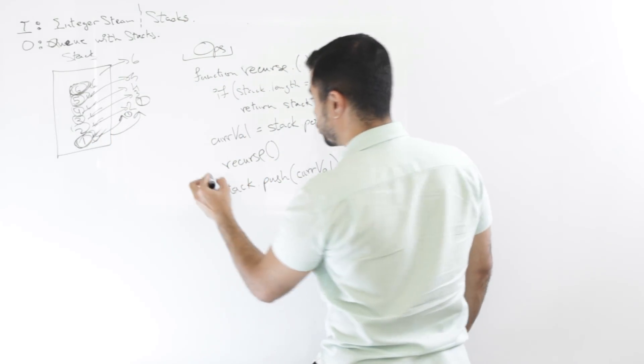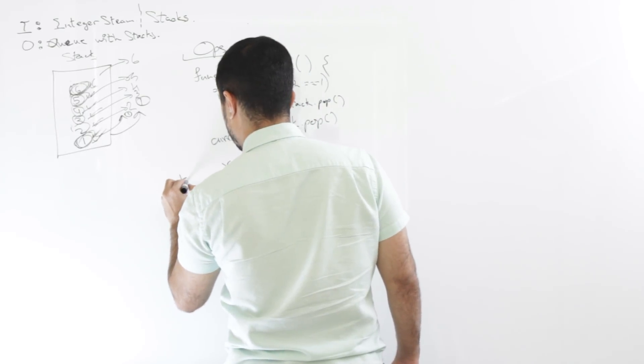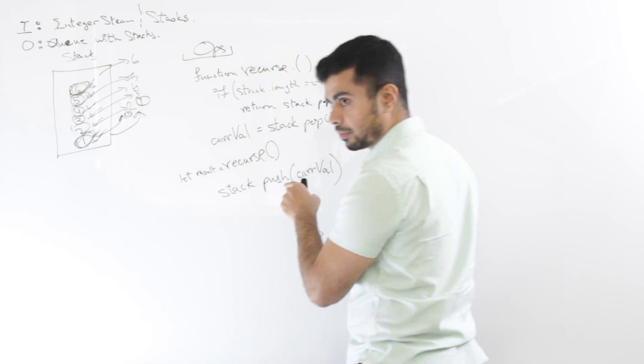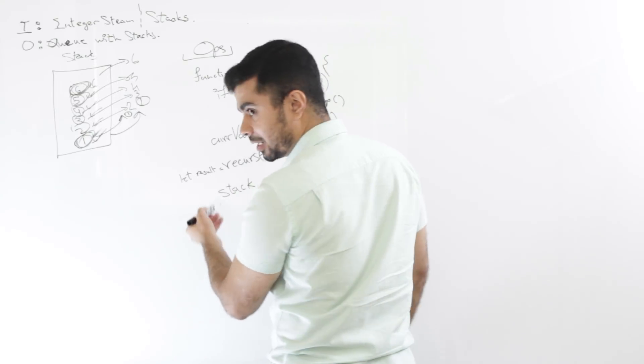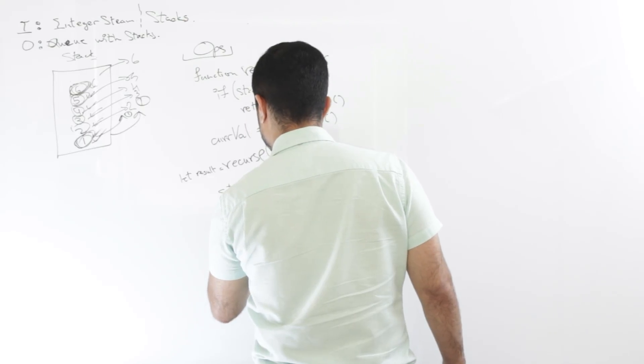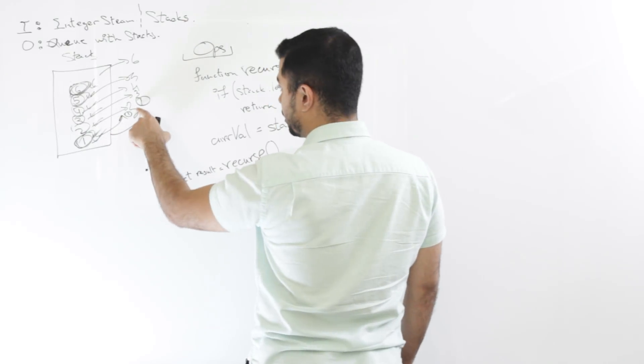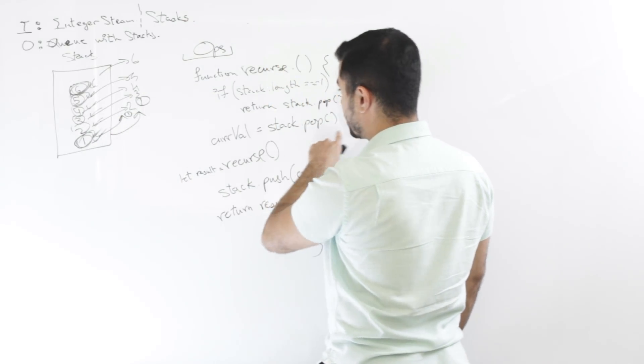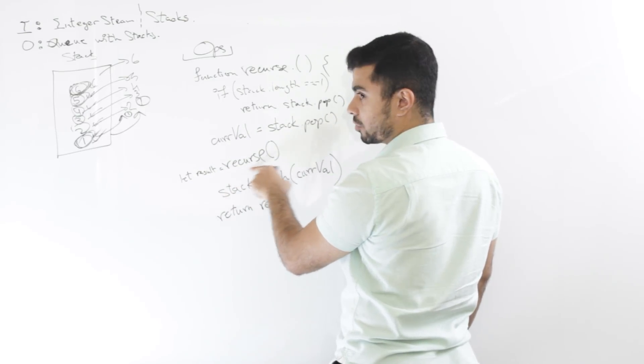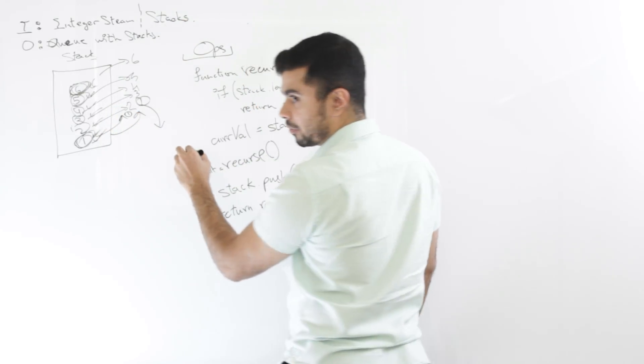Mm-hmm. So what it does is it returns one. Right? So in this case, actually, I need to store this recurse as well. So I'll say let, result equals recurse. Mm-hmm. And then at the end, obviously I need to return something. So I'll say return result. So what happens is one is returned, right? And then, for the second one, the recurse value that is returned is one. And then it pushes two back again. So two is now in the bottom of the stack.